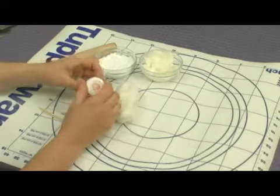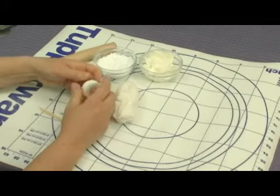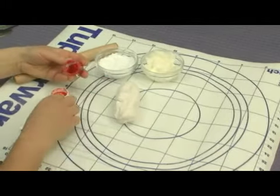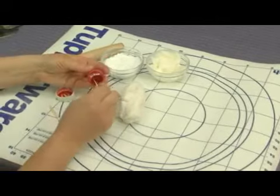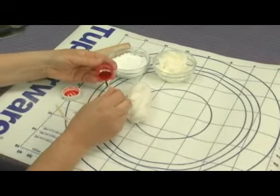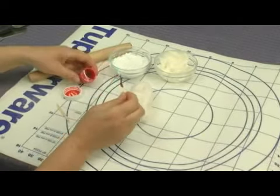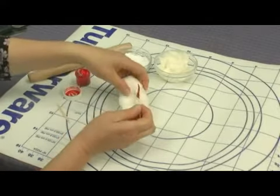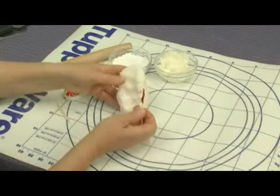We're going to color it with the same color that we used for our frosting. You use a paste color. You don't want to use any liquid colors because they soften the fondant too much and make it too sticky.